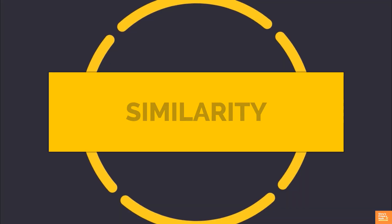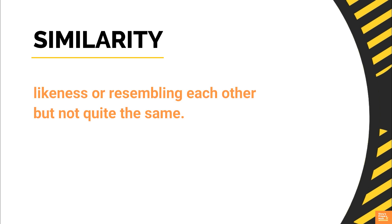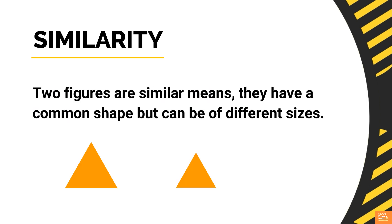Let us first understand the meaning of the terms similar and congruent in mathematical language. Similarity means likeness or resembling each other, but not quite the same. Mathematically, two figures are similar means they have a common shape, but they can be of different sizes.